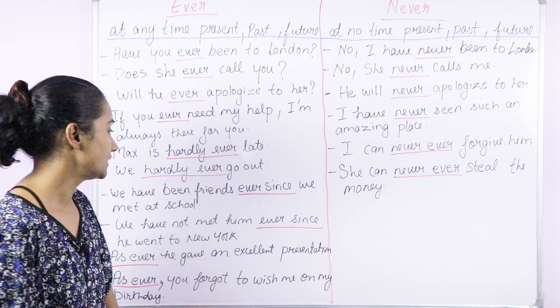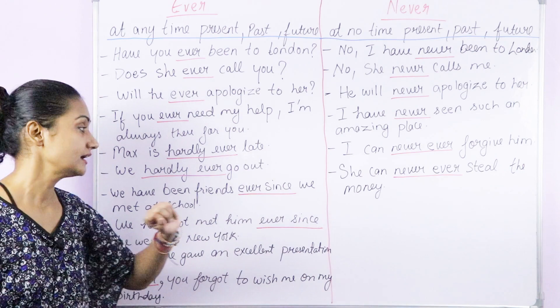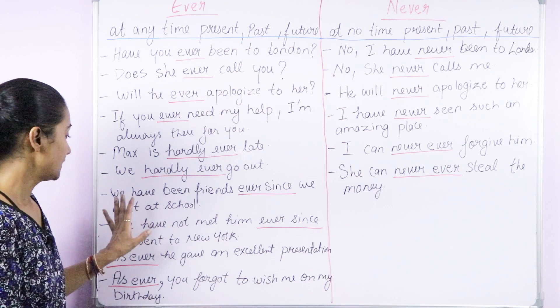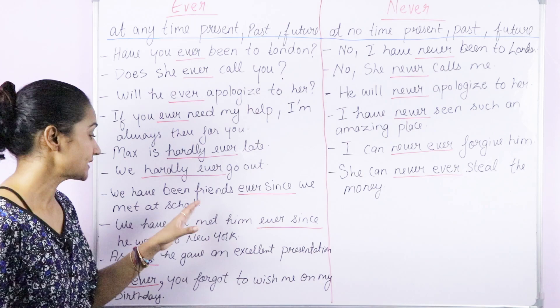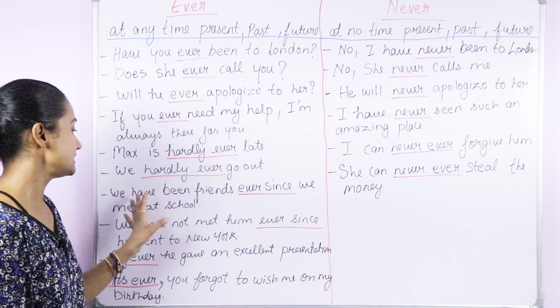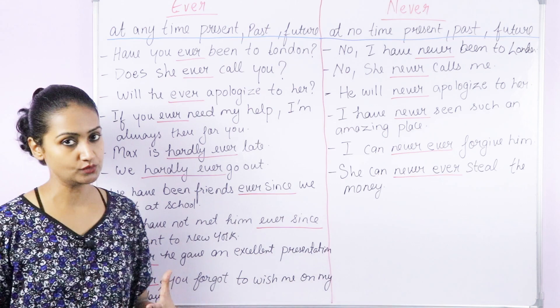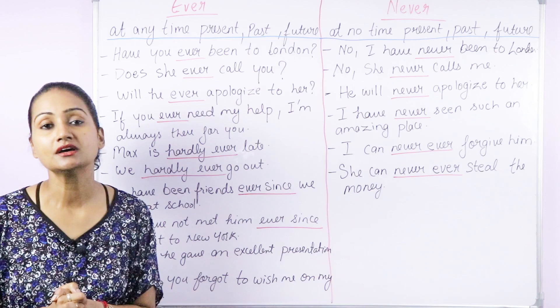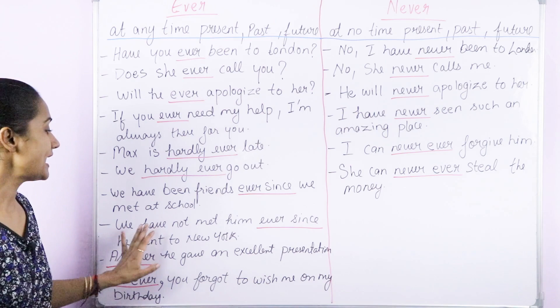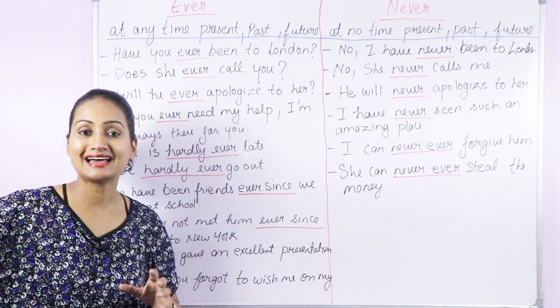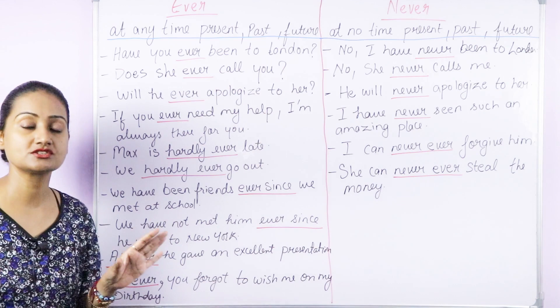Next is the phrase 'ever since,' which means throughout that period. For example: We have been friends ever since we met at school — from the time we met at school until now, throughout that period, we have been friends. You can also say 'since we met at school,' which has more or less the same meaning, but adding 'ever' gives emphasis. Another example: We have not met him ever since he went to New York — throughout that period from when he went to New York until now, we have not met.